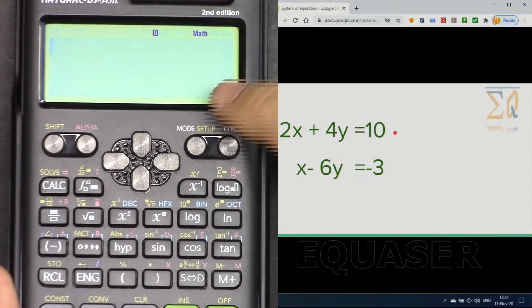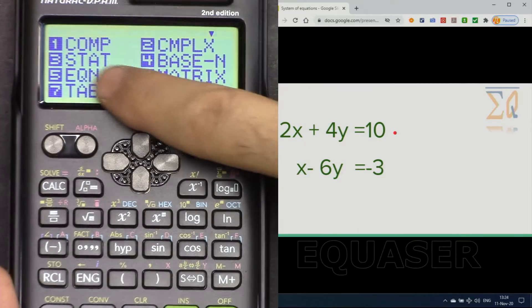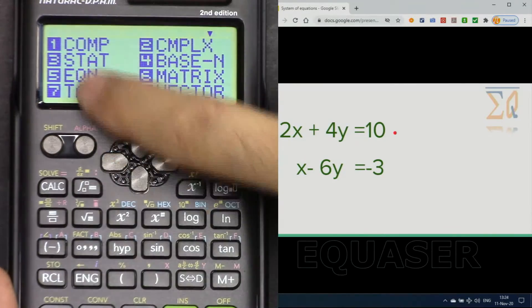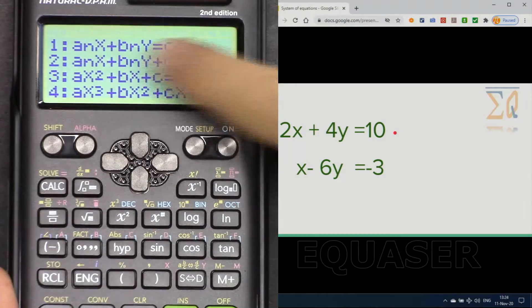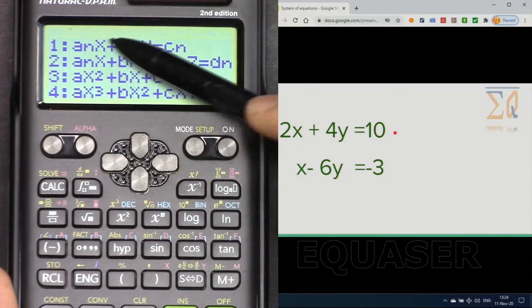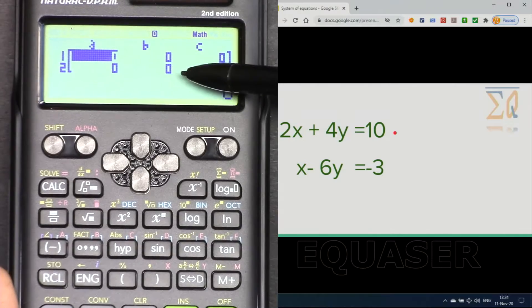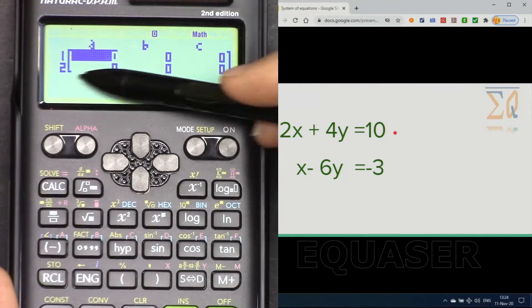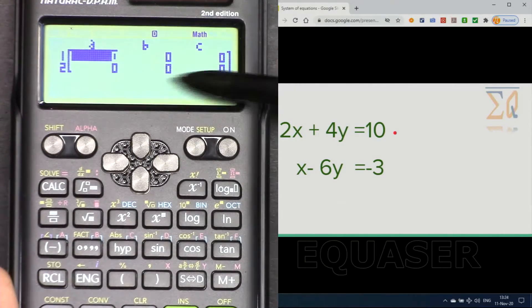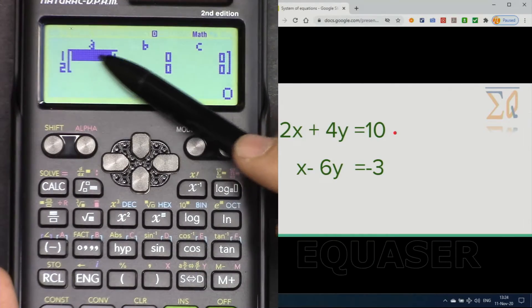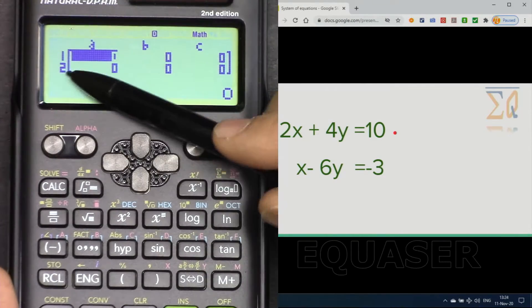Now let's see how we can solve it. Press mode and then go number five equation EQN. Because we are using two variables we press one, and here on this screen we have been presented with this field of matrix that we can enter the value.